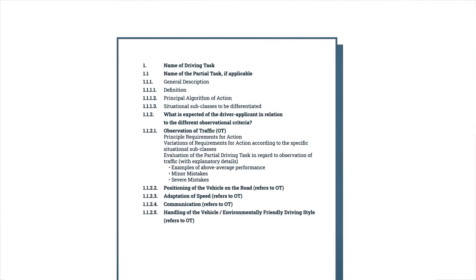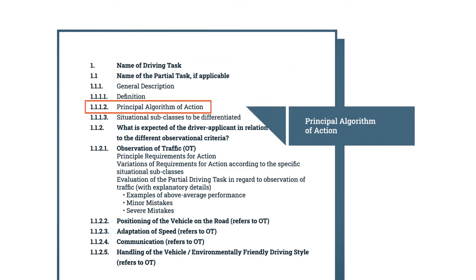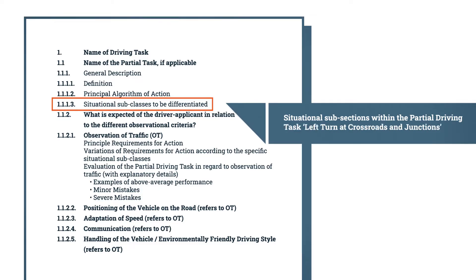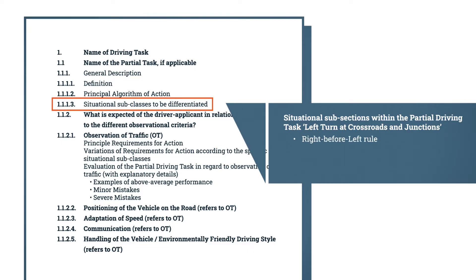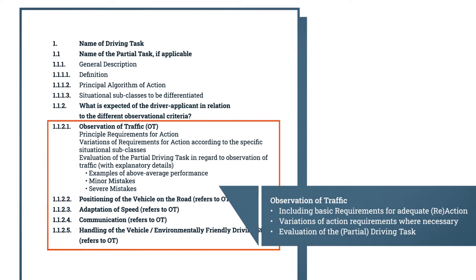The structure of the catalogue of driving tasks is as follows. First, each driving task or partial driving task is defined. This is followed by the principal algorithm of action, which describes the actions that are basically to be carried out to correctly master the driving task. Situation subclasses are defined for some driving tasks — special forms that require special driving behaviour. For example, the partial driving task of turning left at crossroads and junctions is subdivided into the situation subclasses: right before left, with traffic signs that regulate the right of way, with traffic lights, and with regulation of traffic by police officers. The core of the catalogue are the principal requirements for action described for each driving task, where the required behaviour is specified in detail for each of the five areas of driving competence.